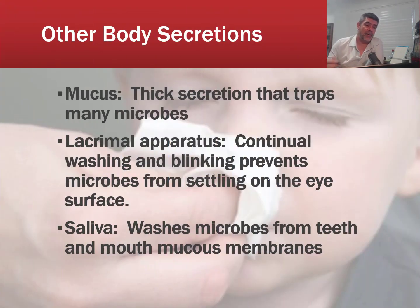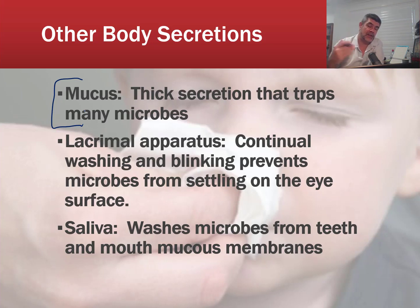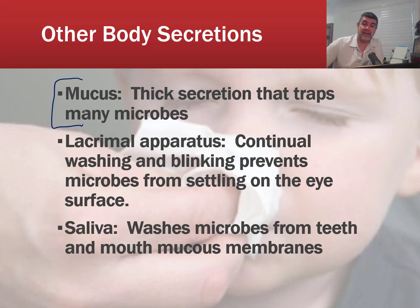A few more chemical barriers to cover: mucus is not just good as a trap but also useful for expelling from our bodies. The lacrimal apparatus is responsible for producing tears, which continually wash and clean the surface of the eye — an important defence since things can grow on the surface or around the lids. Saliva contains enzymes helpful for starch digestion, but it also keeps microbes moving in our mouths and helps eliminate them from teeth and mucous membranes. There are many different body secretions that form part of our chemical defence line against pathogens.